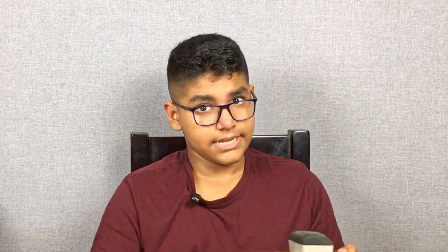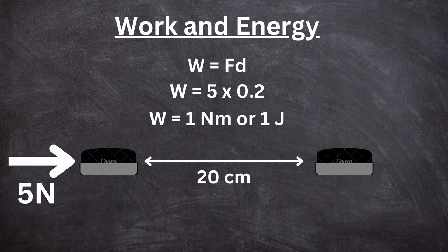Work is calculated by the amount of force applied multiplied by the distance traveled. Say hypothetically this box is 20 centimeters and I gave a force of five newtons — that means I did 100 joules of work. Joules is the SI unit we use, derived from newtons times meters.